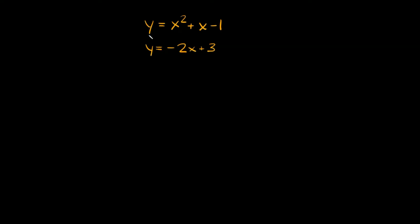So let's do this one first. This one is y equals x squared plus x minus 1, and y equals negative 2x plus 3. As you can see, it's saying that y is equal to all this over here, and y is also equal to all this over here.